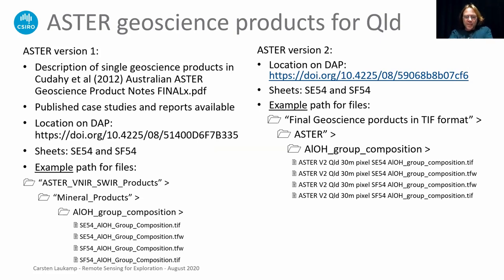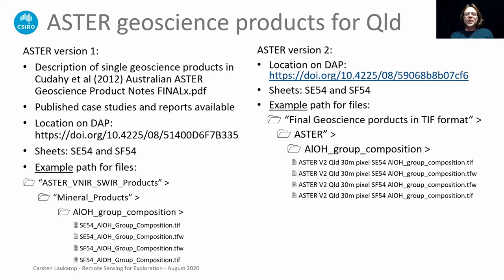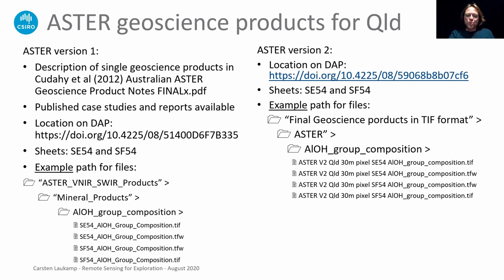The ASTER Version 1 and Version 2 mineral maps can be downloaded from the CSIRO data access portal or from GSQ. The files — TIF, ECW, and TFW formats — can be imported straight into QGIS and other GIS software. These pre-processed mineral map products remove the big hurdle of atmospheric correction and pre-processing of satellite data. When dealing with raw remote sensing data, pre-processing is a very tricky part of the work, but with these mineral maps you can simply upload them into GIS.